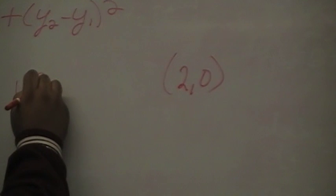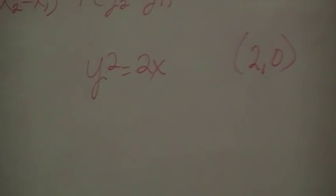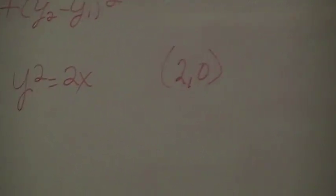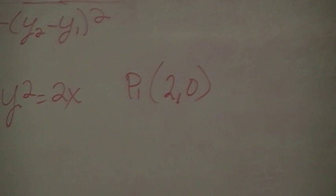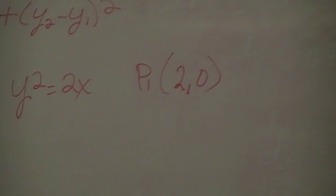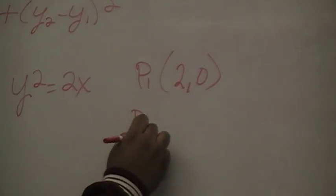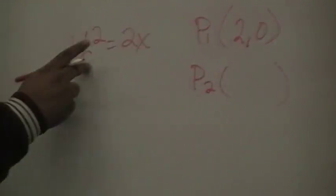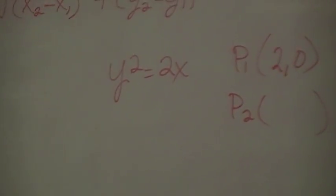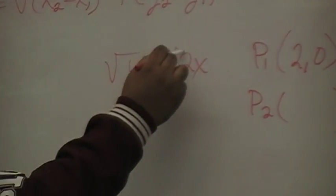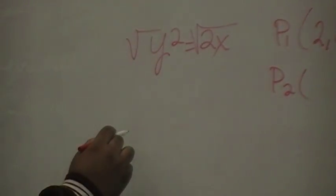And what was the function? Y squared equals two X. Alright. So I know point one — if I call that point one, this is my first point. So in order for me to use this, I need a second point. Well, what if I solve this for Y? What would I get? Square root of two X — I'm going to square root both sides, so Y equals square root of two X.